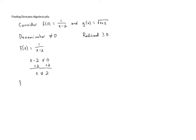We can write the domain as the set of x such that x is not equal to 2. If we check this by plugging in 2, then 2 minus 2 is 0, and we end up with 1 divided by 0, which is undefined. Any other number than 2 is okay, because any other number minus 2 is not 0, so we don't have a 0 in the denominator. Whenever we have a variable in the denominator, we set the denominator not equal to 0 and solve — this gives us the restriction for our domain.